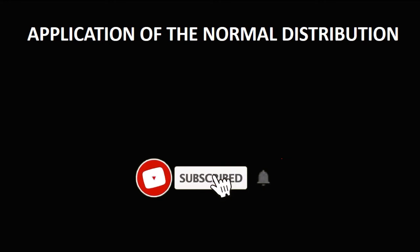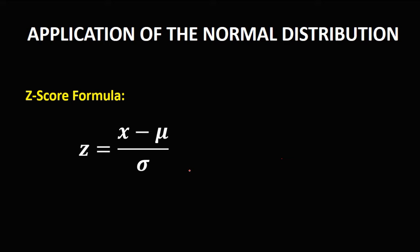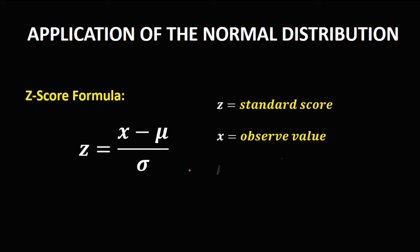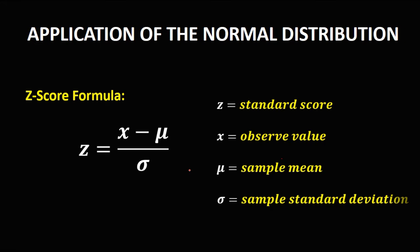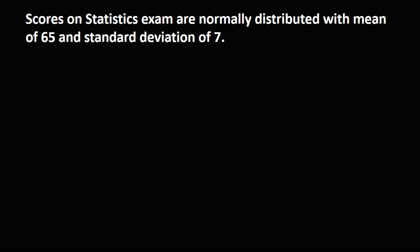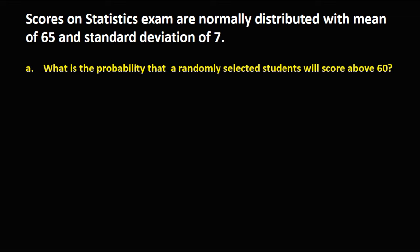Let's have this topic: the application of the normal distribution. Using the z-score formula, we have the standard score, the observed value, the sample mean, and the sample standard deviation. We have this problem: scores on a statistics exam are normally distributed with a mean of 65 and standard deviation of 7.